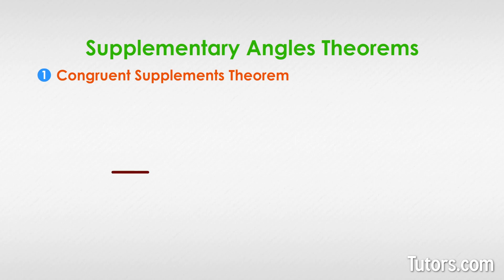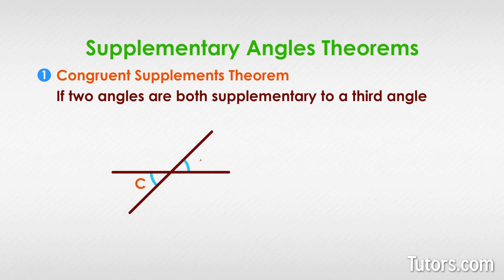Congruent Supplements Theorem says that if two angles, we'll call them angle C and angle A, are both supplementary to a third angle, we'll call it angle T, then angle C and angle A are congruent.